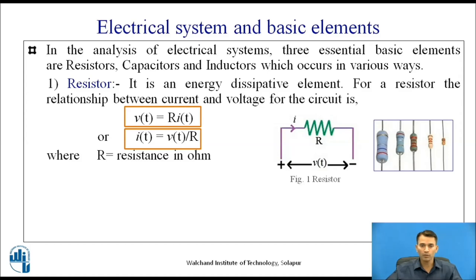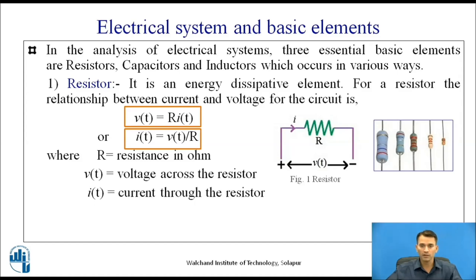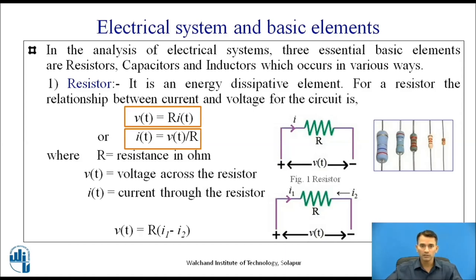Here R is the resistance in ohms, V(t) is the voltage across the resistor, and I(t) is the current through the resistor. For a circuit with two currents flowing in opposite directions through the resistor, the equation becomes V(t) = R × (I1 − I2), since I1 flows from the positive terminal and I2 flows from the negative terminal.